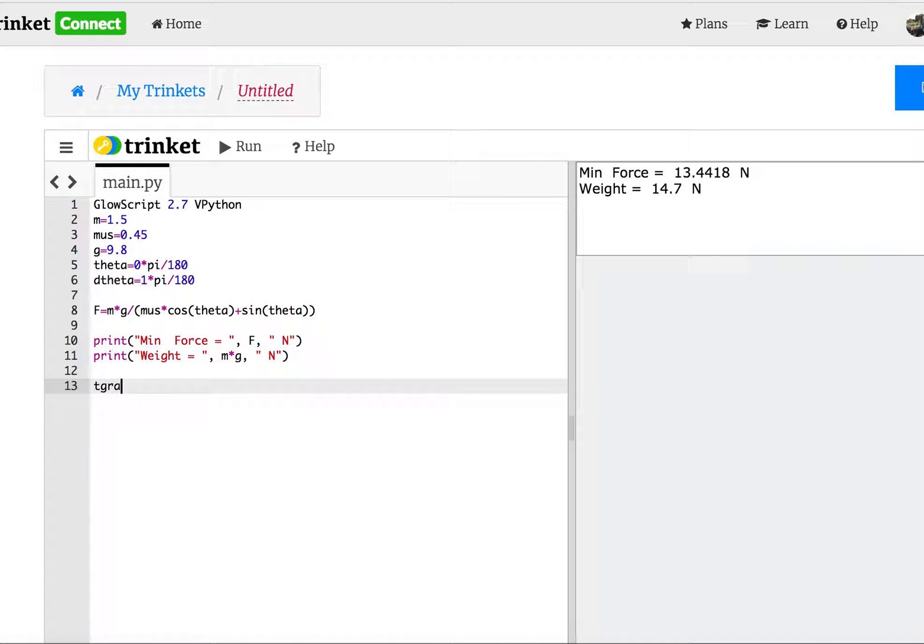Now I want to, I need to make a graph too. Temporary t graph, I like to call it, is an object of type graph. The x title is equal to the angle, I'll say push angle in degrees. And the y title will be min force in newtons. And then I need to make a curve, f1 equals g curve. And I don't have to give it a color, but I always like the color blue just so I can tell the computer that I'm in control and I'll do whatever I want and you can't stop me.